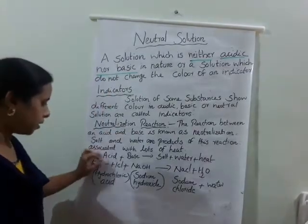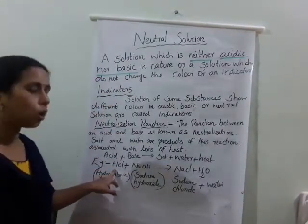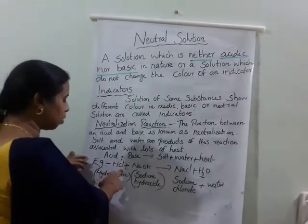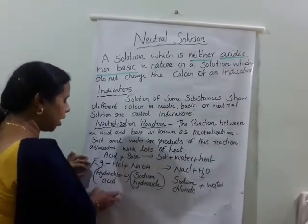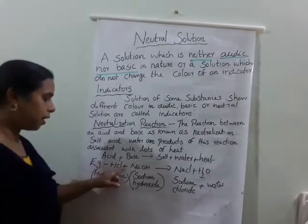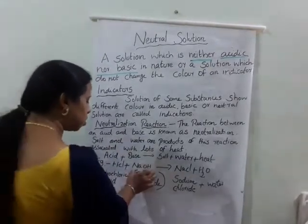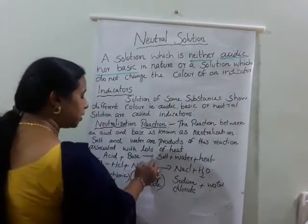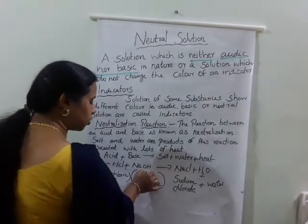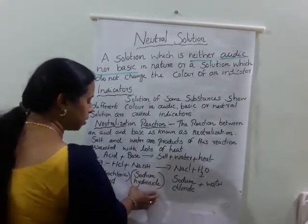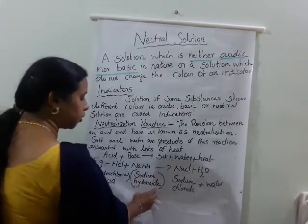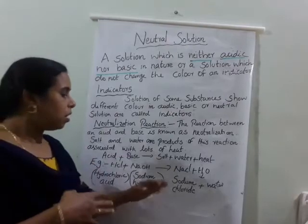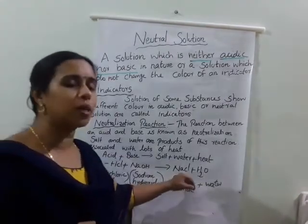The acid I choose is hydrochloric acid — H indicates hydrogen, Cl indicates chlorine, so together: hydrochloric acid. It is mixed with sodium hydroxide — Na indicates sodium, OH is a hydroxyl group, together termed as sodium hydroxide.